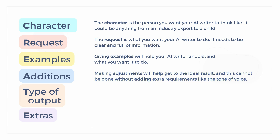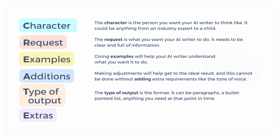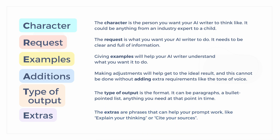Making adjustments will help get to the ideal result, and this cannot be done without adding extra requirements like the tone of voice. The type of output is the format — it can be paragraphs, it can be a bullet-point list, anything you need at that point in time. And finally, the extras are phrases that can help you prompt your work.